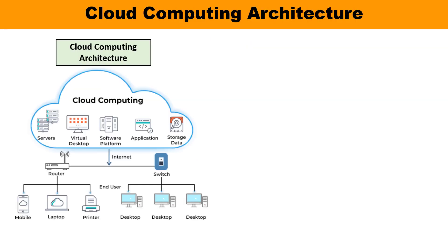First, you need to understand what is Cloud Computing. Cloud Computing is defined as the on-demand availability of computer system resources like data storage and computing power. This is done without direct active management by the users. The objective of Cloud Computing is to give access to data centers to many users, and users can access the data from anywhere, anytime, all around the world.